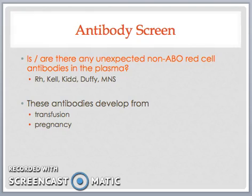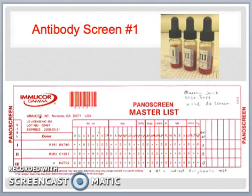Anyone can form an antibody against a foreign red cell antigen that is not on their own red cells, but one must be exposed to the foreign non-ABO red cell antigen through pregnancy or transfusion in order to form the allo antibody against it, unlike the naturally occurring antibodies directed against the A and B antigens in an individual's plasma. We detect the presence of non-ABO red cell antibodies by performing an antibody screen, incubating the patient's plasma against three different kinds of reagent red cells to see whether there is any red cell clumping in any of the reaction wells.